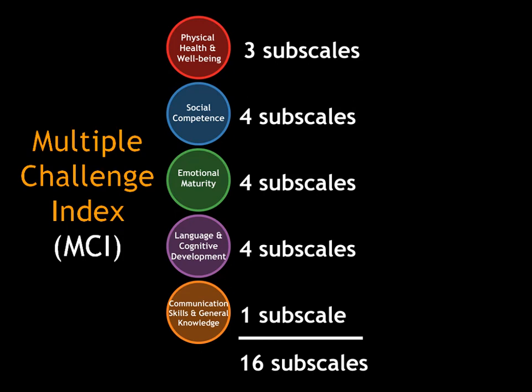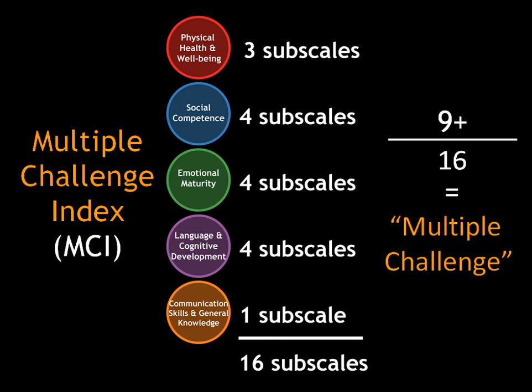If children are vulnerable on nine or more of the 16 subscales, then they have multiple challenges. Being vulnerable on nine or more of the 16 subscales means that you must draw on at least three of the broad scales of physical, social, emotional, language and cognitive, and communication skills and general knowledge.